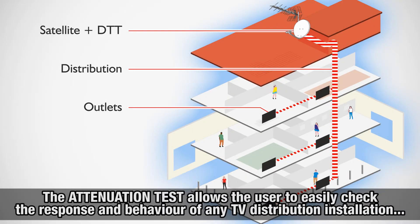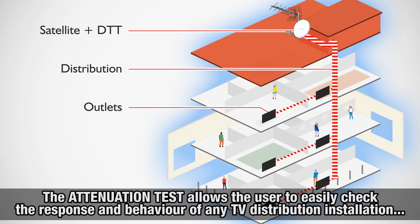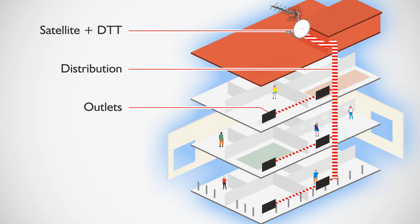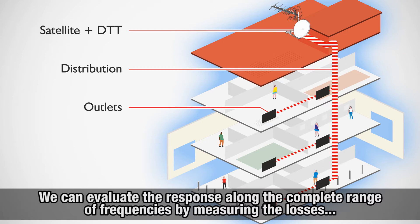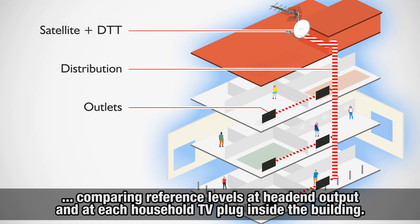The attenuation test allows the user to easily check the response and behavior of any TV distribution installation before antennas and headends are in place and working. We can evaluate the response along the complete range of frequencies by measuring the losses in the distribution of TV signals, comparing reference levels at headend output and at each household TV plug inside the building.